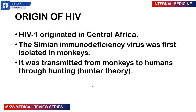Regarding epidemiology — these statistics are from 2019 — over 38 million people are living with HIV worldwide. Out of this 38 million, about 1.8 million are children less than 15. Over 25.7 million are living in Sub-Saharan Africa. 19% of these cases are actually undiagnosed, and among infected individuals, 67% actually accessed treatment. In 2019, about 690,000 people died from HIV-related illnesses worldwide, and 64% of these individuals were found in Sub-Saharan Africa, compared to 1.9 million deaths in 2004 and 1.4 million in 2010.